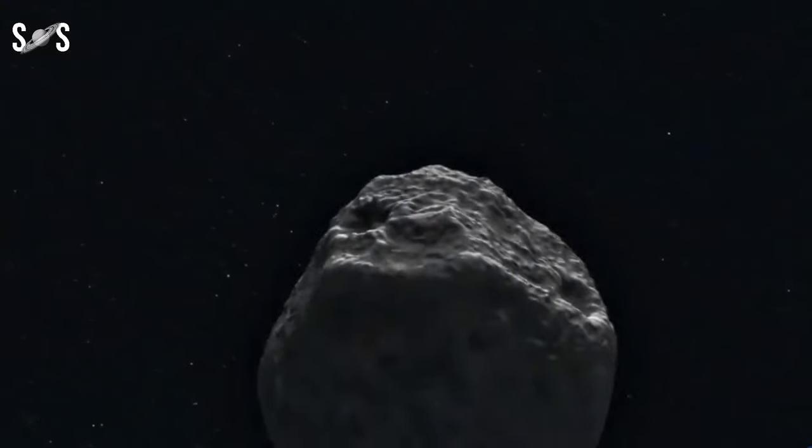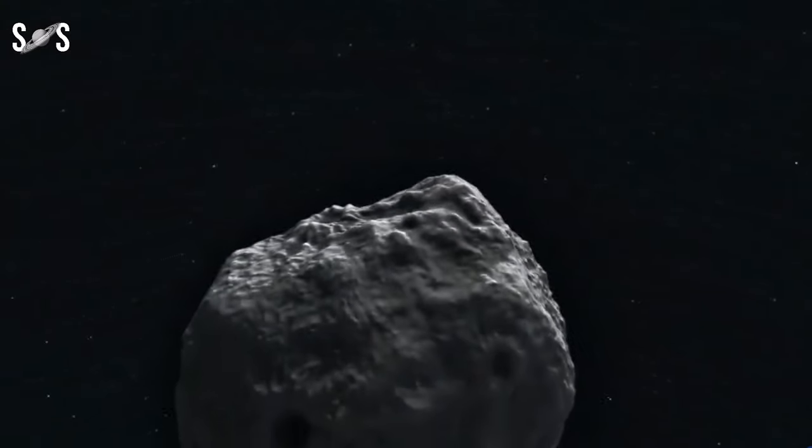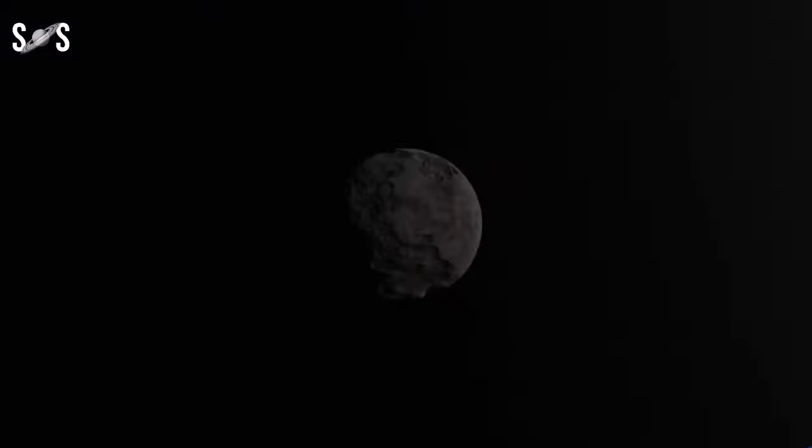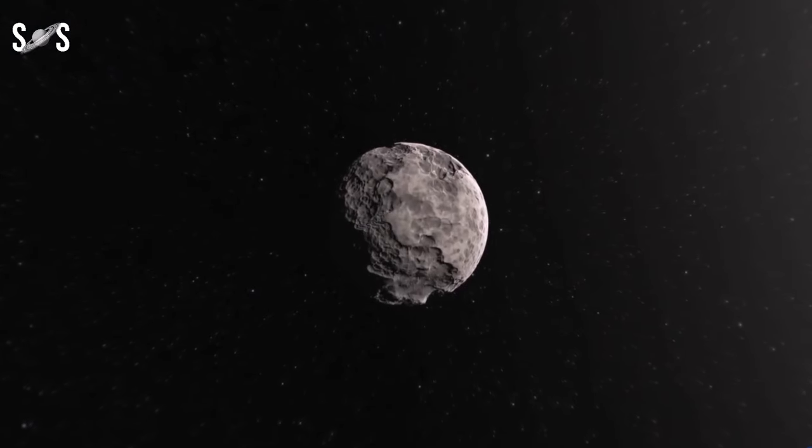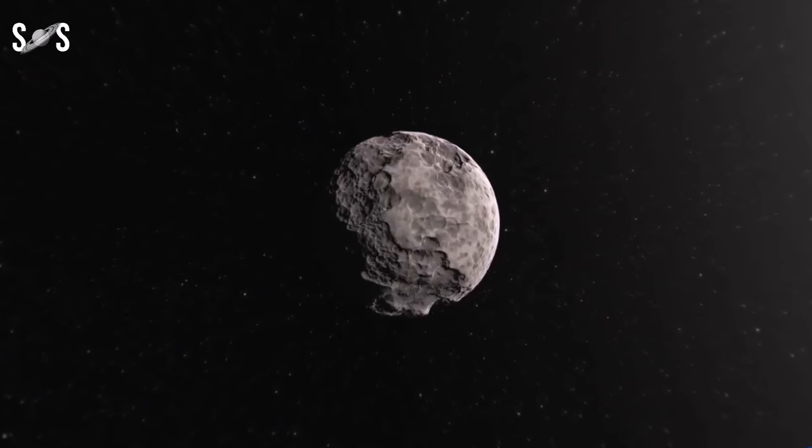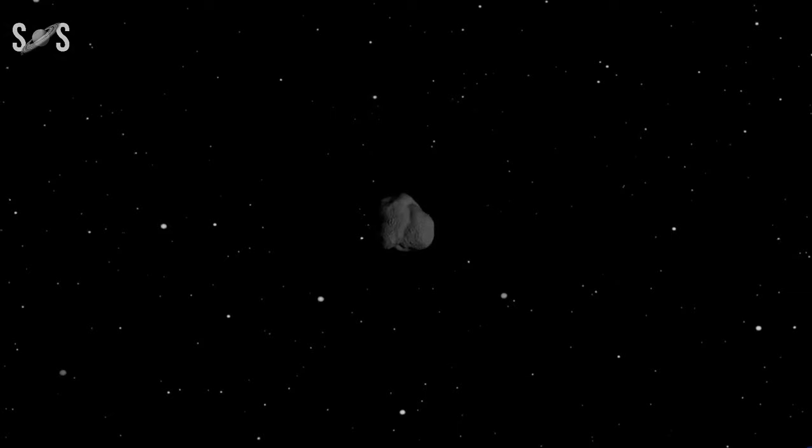We are talking about 2024 PT5, a small asteroid set to become a temporary mini-moon of Earth for about 53 days starting from the end of September 2024. Let's explore what makes this mini-moon so special.